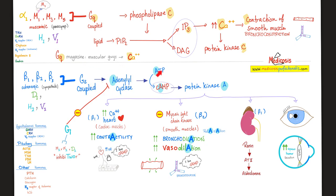The GQ coupled receptor — calcium causes smooth muscle contraction, bronchoconstriction, and vasoconstriction. The G-S coupled receptor stimulates adenylate cyclase, converts ATP to cyclic AMP, activates protein kinase A, increases calcium in the heart, increases cardiac muscle contractility. It inhibits myosin light chain kinase, causing smooth muscle relaxation — bronchodilation and vasodilation. Beta-1 increases renin secretion from the kidney, and beta stimulation increases aqueous humor secretion. Glucagon is G-S coupled.